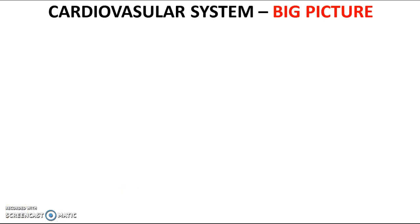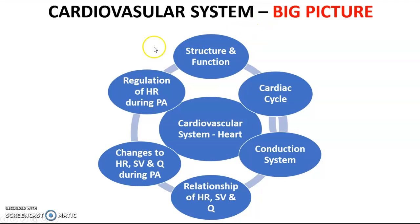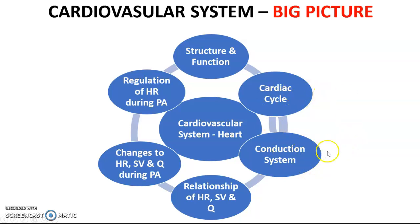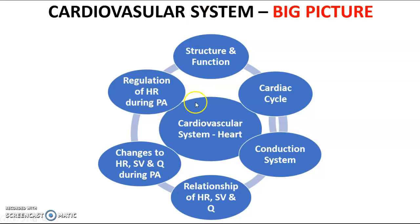Welcome to Cardiovascular System Lesson 3. Looking at the big picture of where we've been so far: we covered structure and function, the cardiac cycle including diastole and systole, the conduction system and the electrical impulse generated by the SA node, heart rate, stroke volume, and cardiac output graphs, resting values for each, and how they change during submaximal and maximal exercise. This final part looks at regulation of heart rate during physical activity.